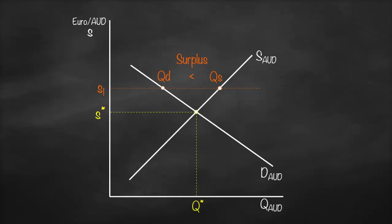Every time we have a surplus of a currency, what will happen to the exchange rate? The exchange rate will go down, which means that our currency will depreciate.